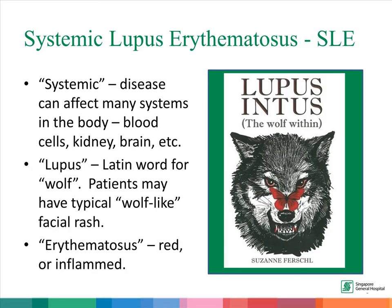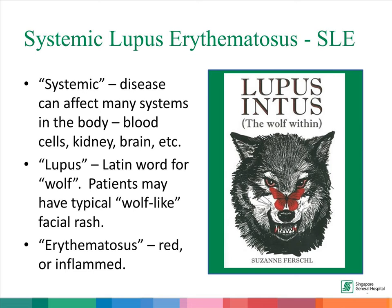Systemic lupus erythematosus, as the name suggests, is a condition where there is systemic disease — that is, the disease can affect many systems in the body, including blood cells, the kidney, and the brain. Lupus is a Latin word for wolf, and patients often have this typical wolf-like facial rash. Erythematosus means red or inflamed. So in short, SLE is a condition with systemic disease characterized by a red, wolf-like facial rash.